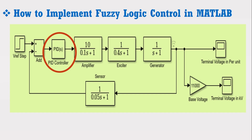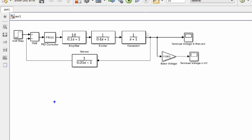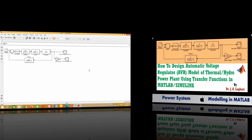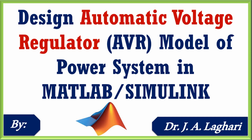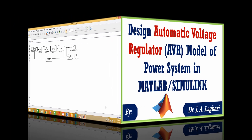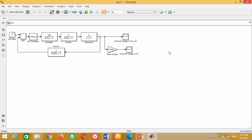Now let's start. The first requirement is that we must have the conventional model of any system. For your convenience, I am considering the simple automatic voltage regulator model of the thermal hydropower plant using transfer function in MATLAB Simulink software. Therefore, if you watch this video and apply the fuzzy logic controller in this model, it can be used for your master degree research or one of the PhD research objectives. Just locate the model. It may be observed that in this model we are using the PID controller. Now to get better visibility, I am going to make some changes.